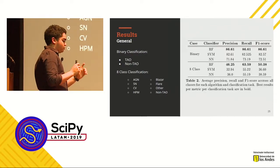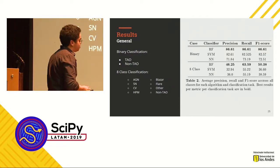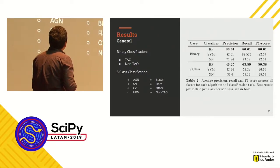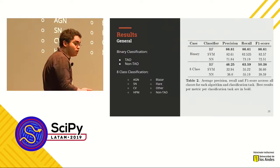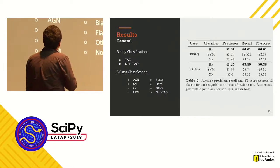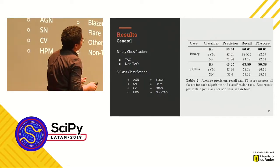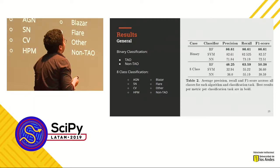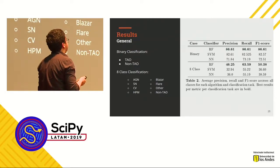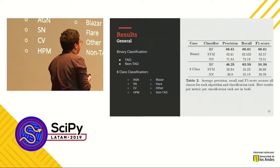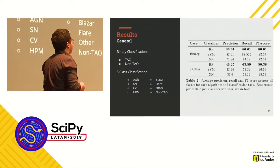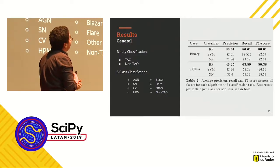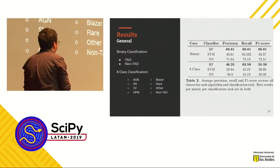We framed two problems. The first is a binary classification problem: given a light curve, is it a transient object or a non-transient? The second generalizes this: tell me not only if it's transient, but which type of transient. For the binary problem, random forests achieved a precision of 86%, recall of 86%, and F1 score of 86%. This drops dramatically for the multiclass problem — reaching a precision of 46%, a recall of 63%, and an F1 score of 50% — because the problem becomes much more difficult.